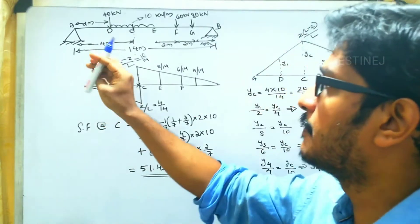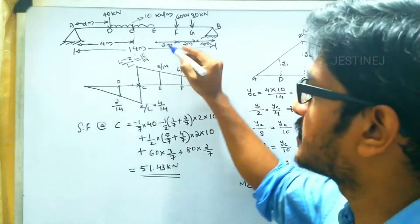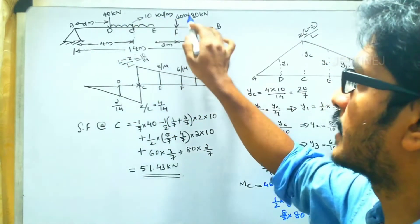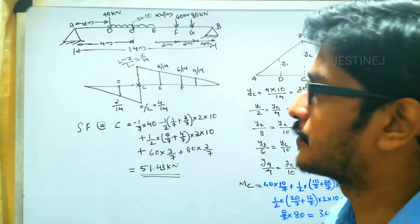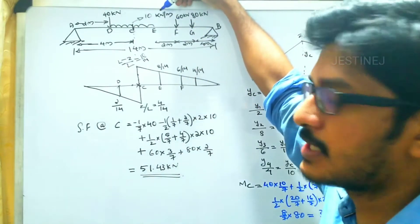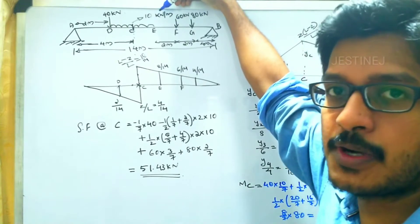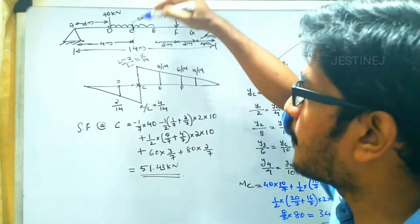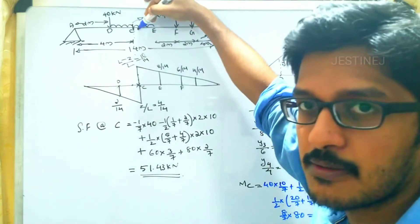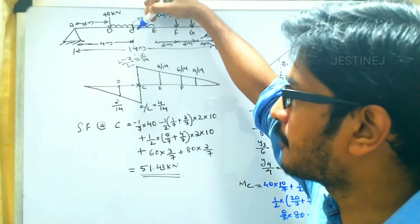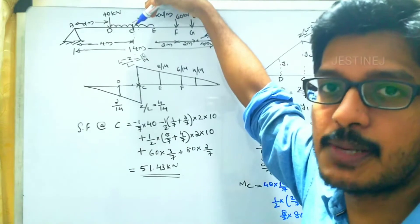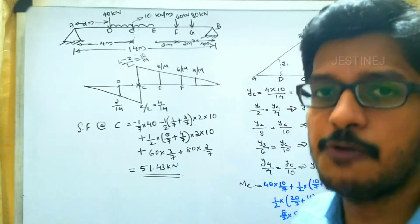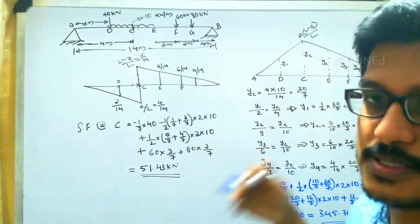A simply supported beam with a total span length of 14 meters is given. Different point loads of 40 kN, 60 kN, and 80 kN are acting on it, along with a UDL of magnitude 10 kN/m. We have to find the shear force at point C and the bending moment at point C using the influence line diagram.